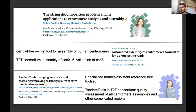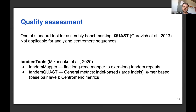Once we had the assemblies, we needed quality assessment, but no tools existed for this. We developed TandemTools, used for quality assessment of all 23 centromere assemblies and other complex regions. Standard tools like QUAST are not applicable here because they rely on a reference given in advance — here we are generating the reference for the first time. We had to develop a mapper that could map reads to assemblies consisting essentially of long tandem repeats, and a general set of metrics to find discrepancies between the assembly and the reads.